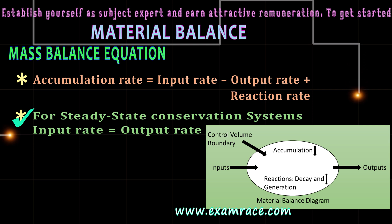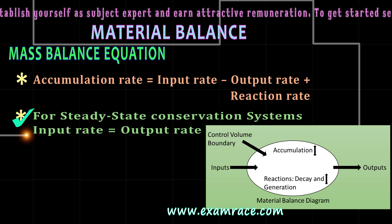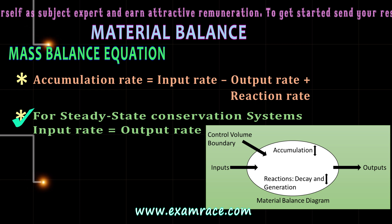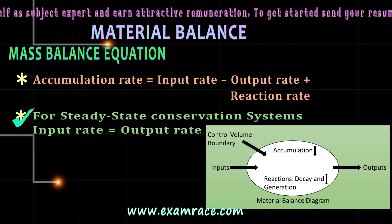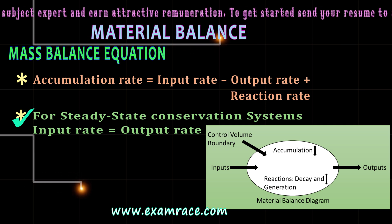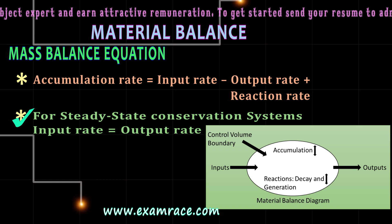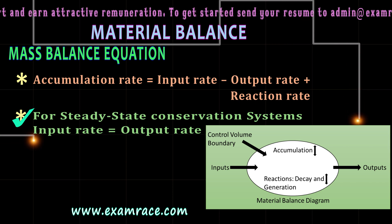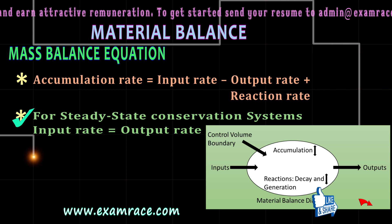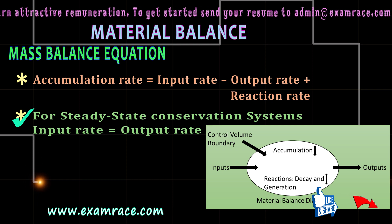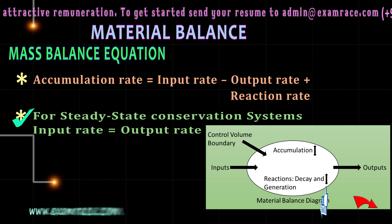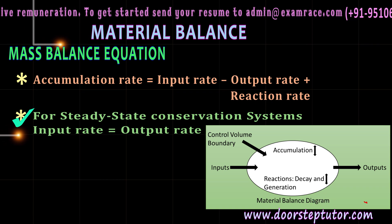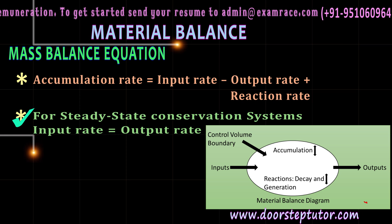For a steady state condition system, the mass balance equation simplifies to: input rate equals output rate, because the accumulation rate and reaction rate become zero. In a steady state system, the accumulation rate is equal to zero, and as the system is conservative, the reaction rate also becomes zero. So the input rate becomes equal to the output rate.